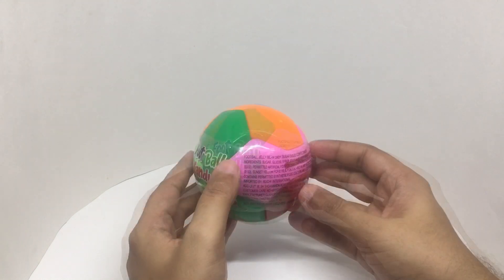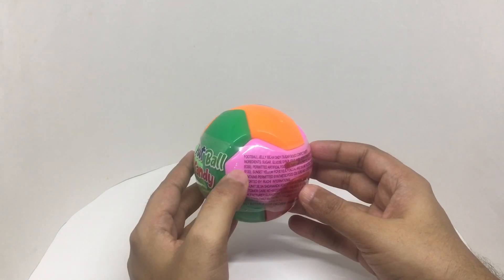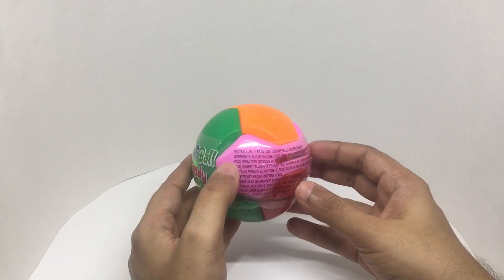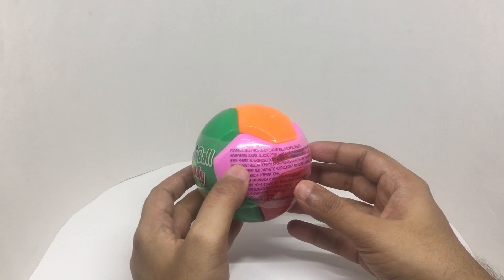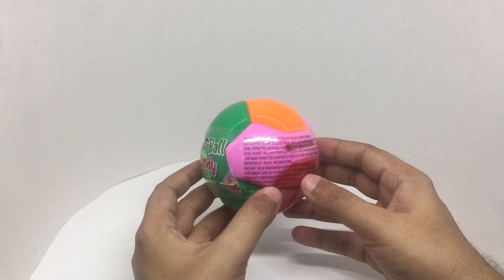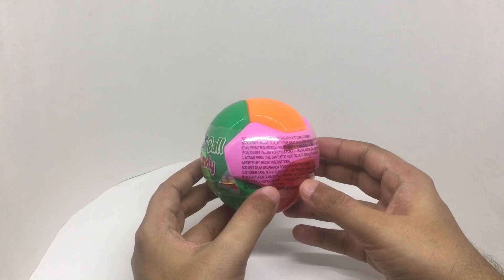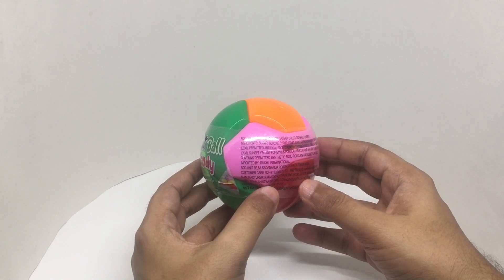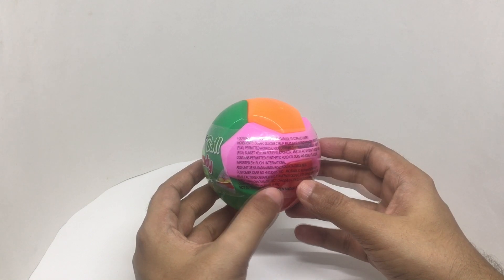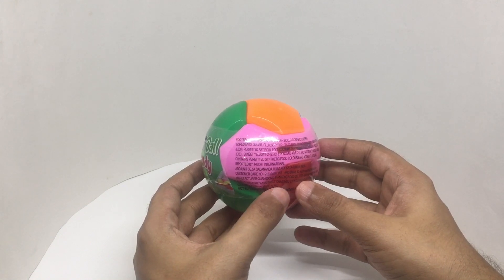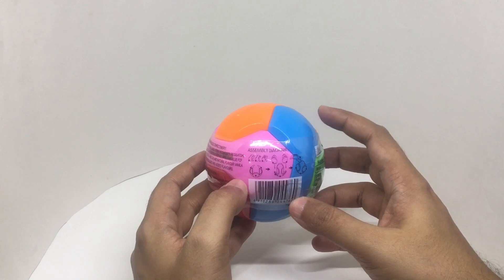These are football jelly bean candies. Ingredients are sugar, glucose syrup, fruit juice, citric acid, acidity regulators, permitted artificial food colors, tartrazine, brilliant blue and sunset yellow, natural vanilla flavors. The ball on the outside is a puzzle ball.